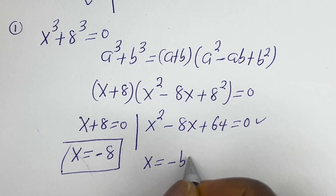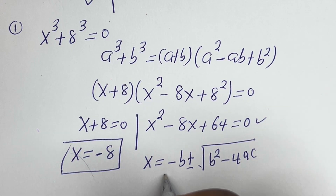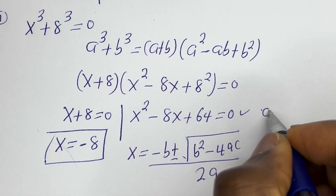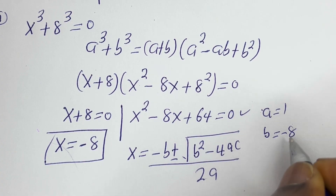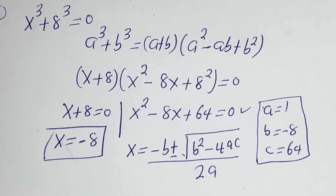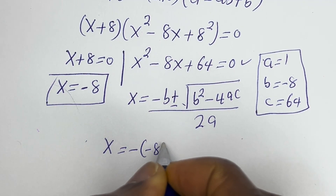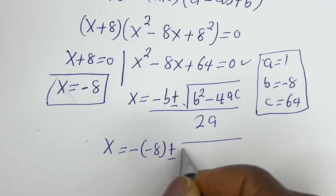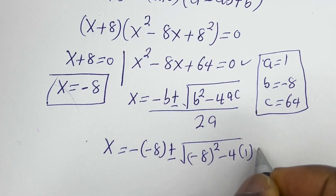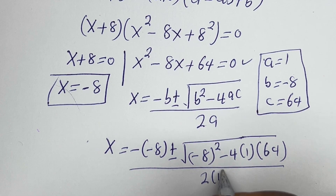s is equal to minus b plus or minus square root of (b squared minus 4ac), all over 2a. From this equation, a equals 1, b equals minus 8, c equals 64. So s equals minus(minus 8) plus or minus square root of ((minus 8) squared minus 4 times 1 times 64), divided by 2 times 1.